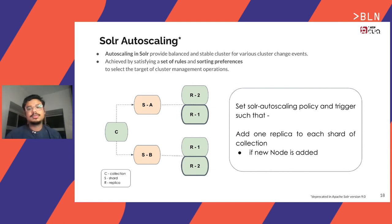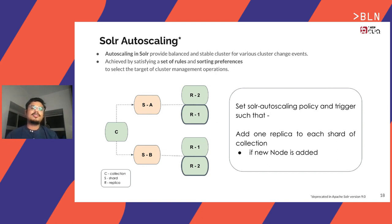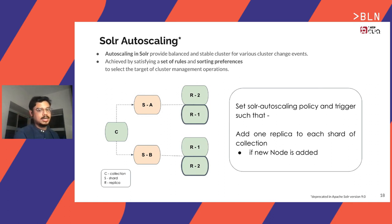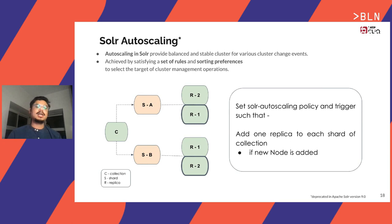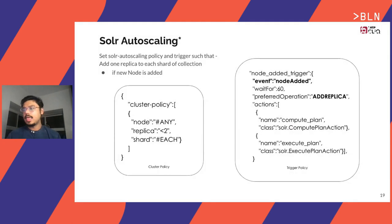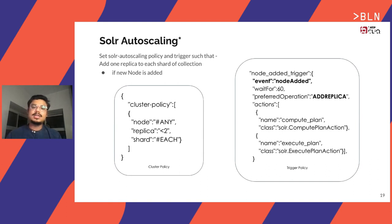Autoscaling in Solr provides a balanced and stable cluster for various cluster change events. It is achieved by satisfying a set of rules and sorting preferences to set the target of a cluster management operation. What we really want to do here is to set a policy and a trigger at a Solr cluster level such that every time a new node is added to the cluster, one replica for each shard for each collection is hosted on it. On the right-hand side, a node-added trigger with preferred operation add-replica is set. Whenever a new node is added, replicas are added to that node. The cluster policies on the left-hand side are set such that in the entire cluster each node can have at most one replica for each shard. This is done such that when a new pod is added by the trigger, only a single replica is added.